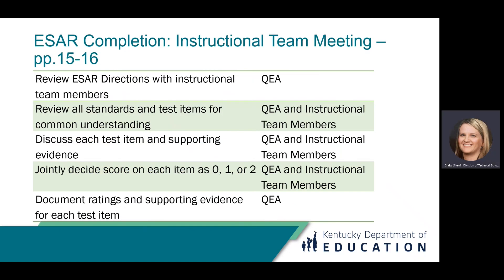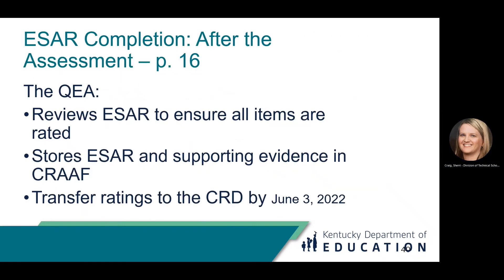During the instructional team meeting or other meetings if needed, the QEA reviews the ESAR directions with instructional team members. Together, the team reviews all standards and test items for common understanding. Then instructional team members discuss each item and supporting evidence, and jointly decide how the student's performance on each item should be scored — either as a 0, 1, or 2. The QEA documents the ratings and gathers supporting evidence for each test item. After the assessment, the QEA reviews the completed ESAR to ensure all items have been marked, then stores the finalized ESAR and supporting evidence in the CRAF within a secure location.